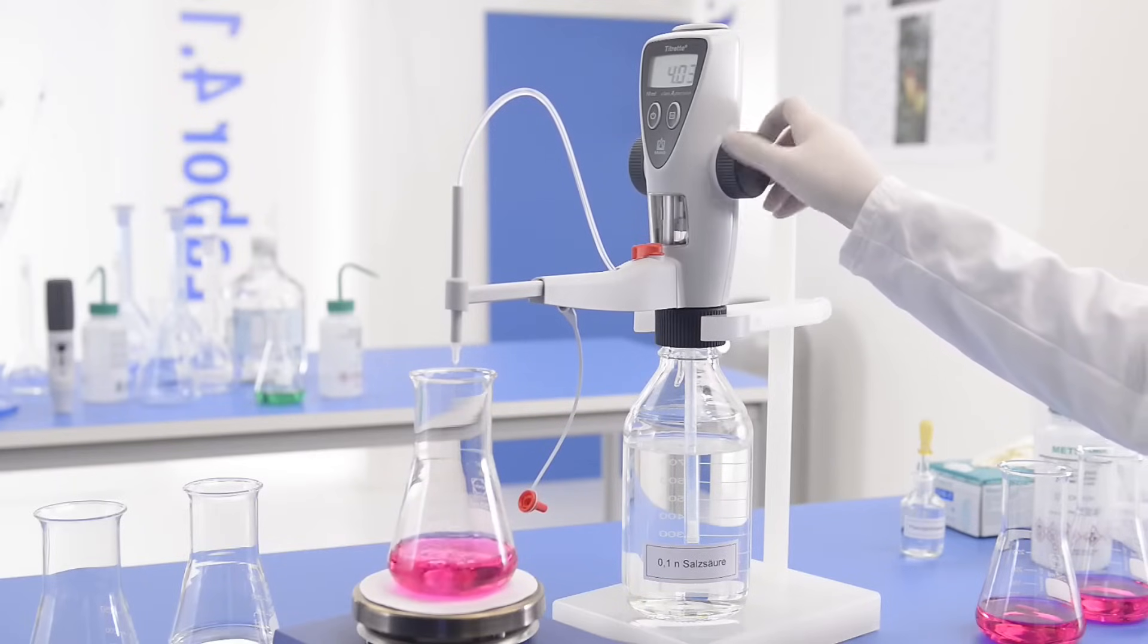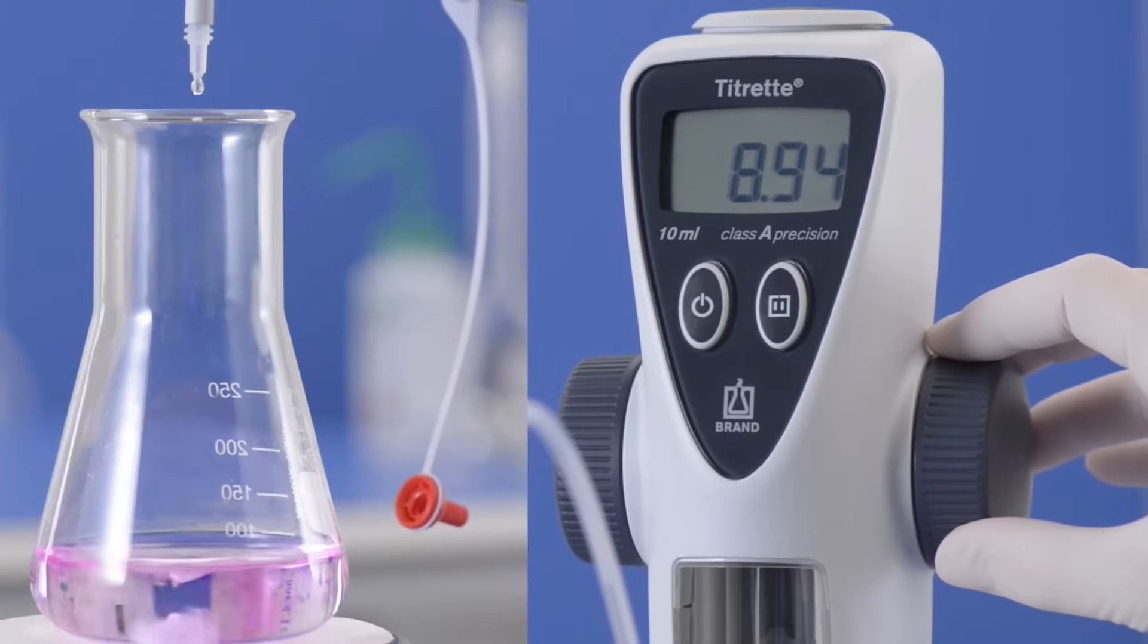If the approximate concentration is known, titration can proceed quickly until shortly before the end point. Then add the standard solution, drop by drop, until the color change.